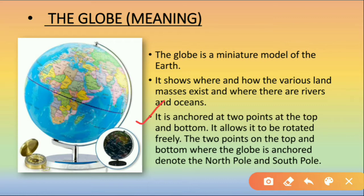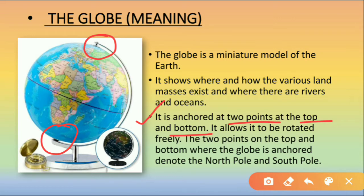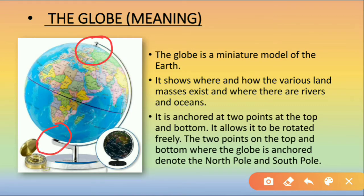The globe is anchored at two points at the top and at the bottom, which allows it to be rotated freely. You can see on the top it is anchored with a pin, and on the bottom also it is anchored with a pin, so that it can easily rotate like the real earth rotates. The two points at the top and the bottom where the globe is anchored denote the north pole and the south pole. The top one is the north pole and the bottom one is the south pole.